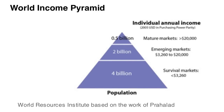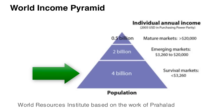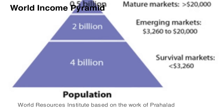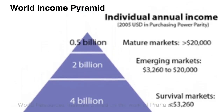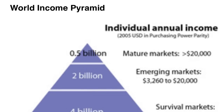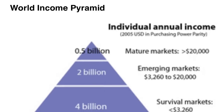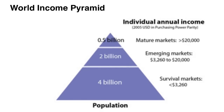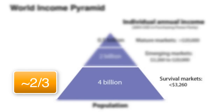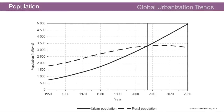What does the income distribution look like for this global population? This income pyramid, based on the work of Prahalad, shows that there are four billion people at the base of the pyramid in what would be considered a survival market. In terms of 2005 US dollars purchasing power parity, they make less than three thousand three hundred dollars a year. The mature markets, where people make more than twenty thousand dollars a year, sit at the top with only about 0.5 billion people. The vast majority of people on the planet are in what would be considered a survival market, making less than ten dollars a day.